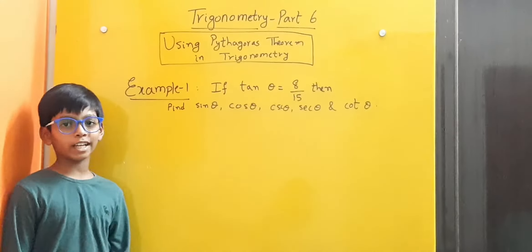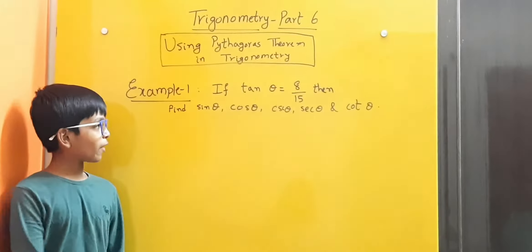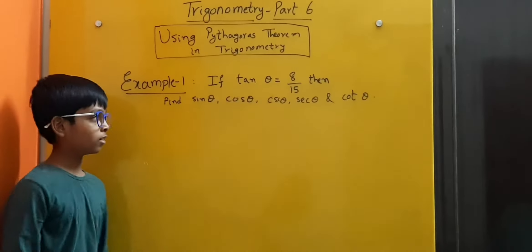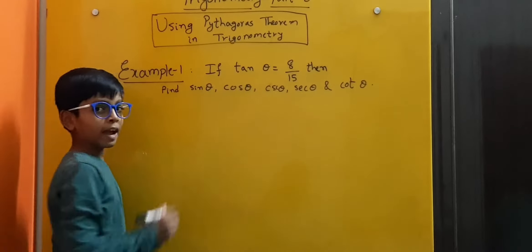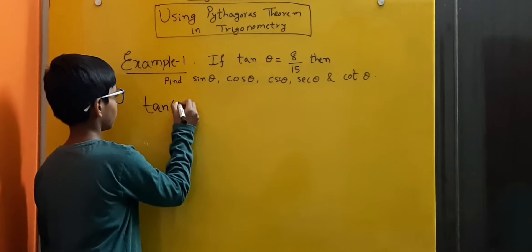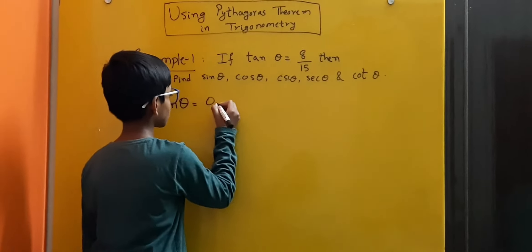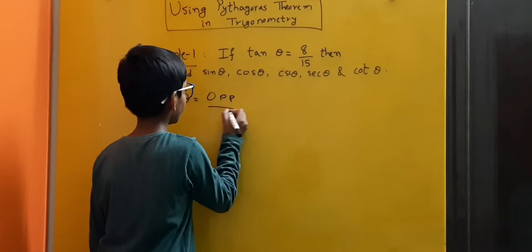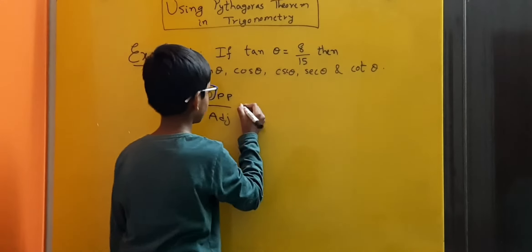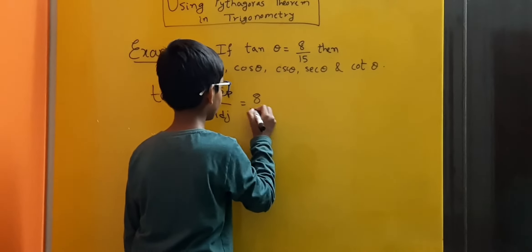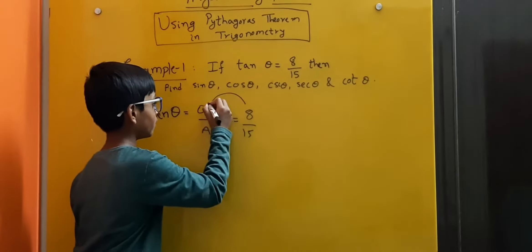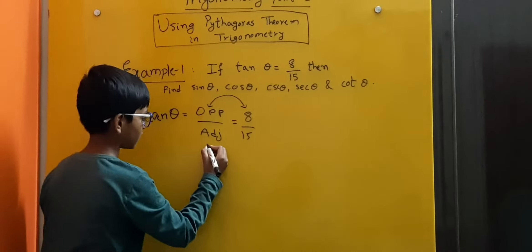Now let us solve an example problem. We have to find all the trigonometric ratios from this given trigonometric ratio. Here we know that tan theta is equal to opposite by adjacent, which is equal to 8 by 15. So in our triangle, the opposite is 8 and the adjacent is 15.